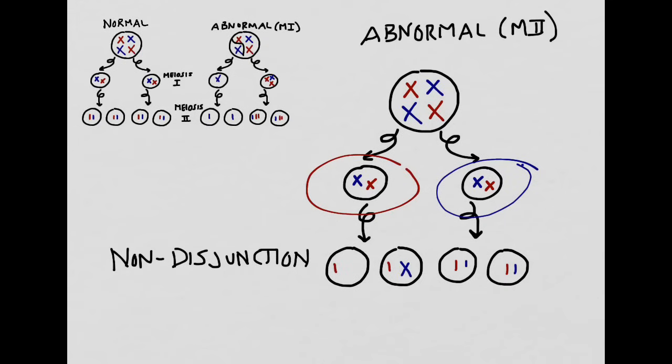Non-disjunction is much more common in older individuals. So the older someone is, the more sticky their chromatids become, and the less likely they are to separate. This is why older parents are more likely to have children with chromosomal abnormalities. Non-disjunction can occur either in meiosis I, meiosis II, or in both. However, we can see here that having it occur in meiosis II is slightly better than having it occur in meiosis I.